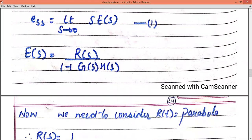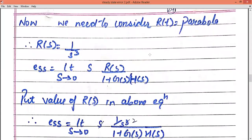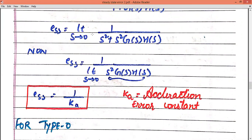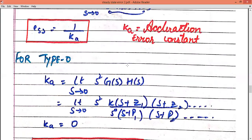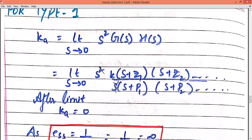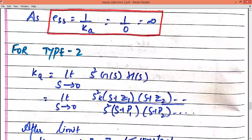The same steps you have to follow for the parabolic signal. After representing the parabolic signal in the error signal, we get a static constant which will be named KA. In the unit step we represented KP, in the unit ramp we represented KV, and now we are representing KA. The procedure will be the same for type 0, type 1, and type 2 systems — first find the value of KA, then implement it in ESS.